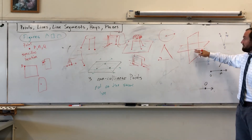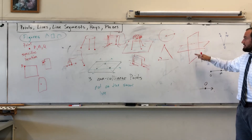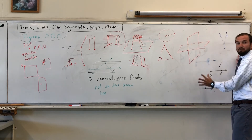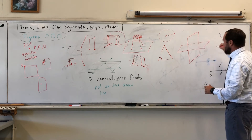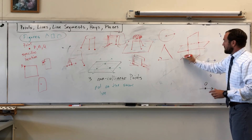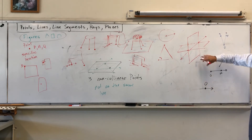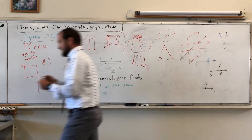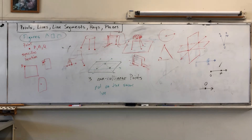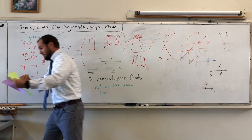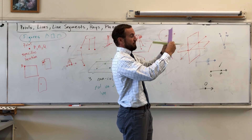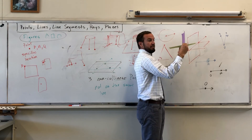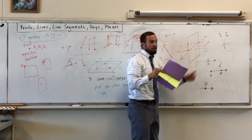My favorite thing to have you draw, and something you'll be responsible for on a free response, is intersecting planes. When I make dashes, that's showing the line is behind the figure. With two intersecting planes drawn in three dimensions, you get a figure that looks like a cross-shape viewed in 3D. We'll practice that as well.